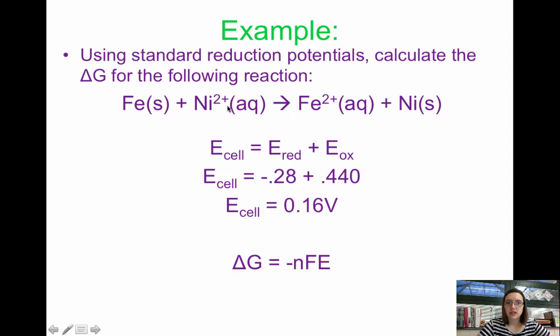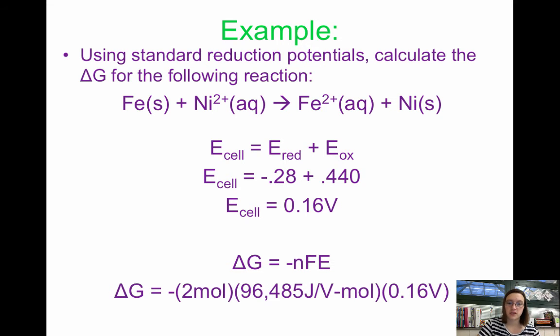Let's figure out, based on this overall equation, how many electrons would have to be transferred. We have iron going to iron 2+, that's losing two electrons. Ni2+ is gaining two electrons. So that means your number of moles of electrons transferred is 2.